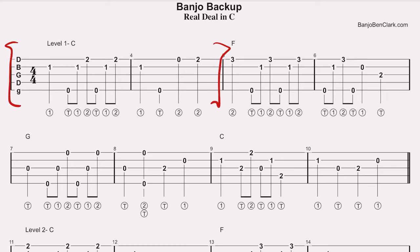We've got two measures of each chord: two measures of C, then two measures of F, then two measures of G, and then we wrap it up with two more measures of C. The first building block I'm going to give you is: whenever we start on a new chord — so every two measures — we're going to start by playing the root note of that chord.